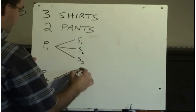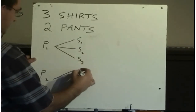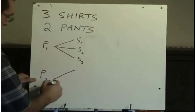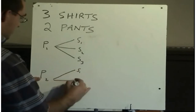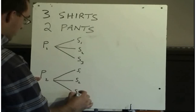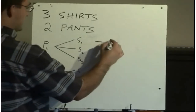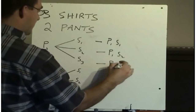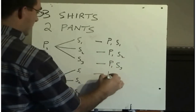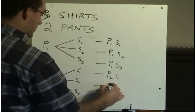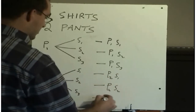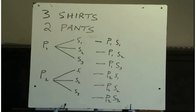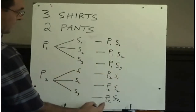We call this a tree diagram because it looks like the branches of a tree. If we wore the first pair of pants, we could wear the first, second, or third shirt. If we put on the second pair of pants, we could put on the first, second, or third shirt. So we can list all possible outcomes: first pants with each of the three shirts, and second pants with each of the three shirts.